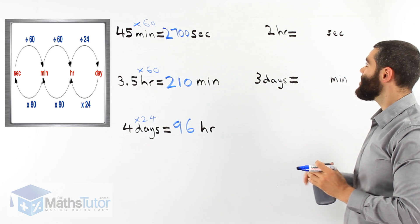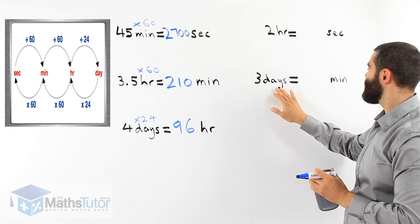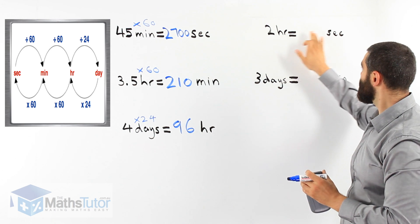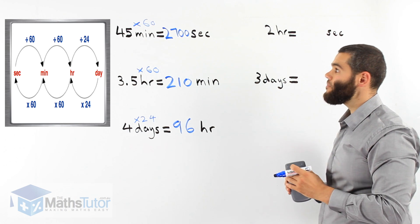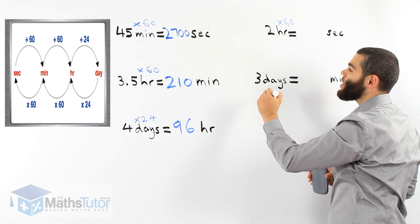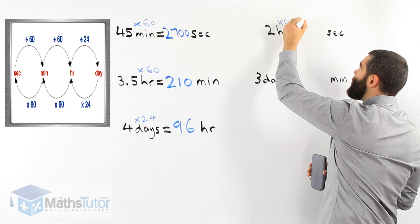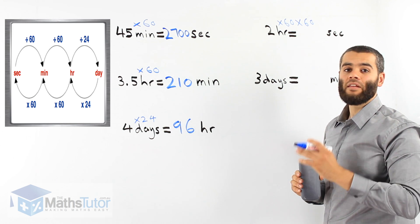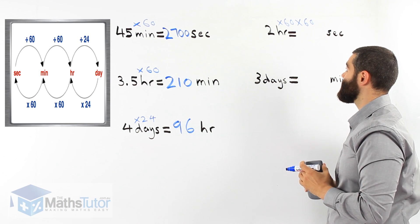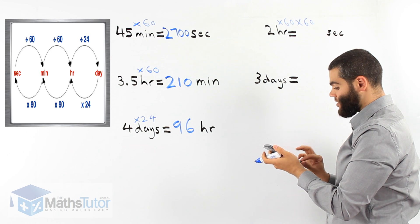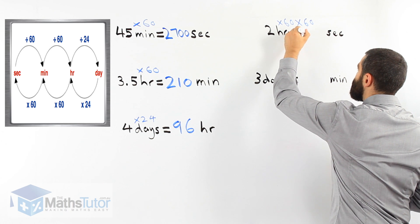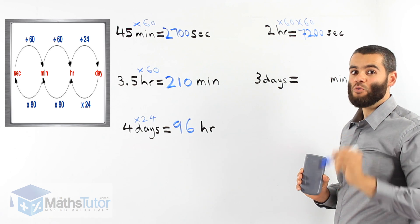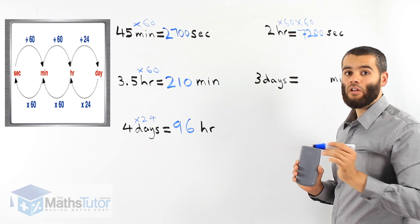In this example, we're going from hours to seconds for this one, and from days to minutes for the other. Two hours to seconds — we're going from hours all the way to seconds. To go from an hour to a minute we multiply by 60, and then from minutes to seconds we multiply by another 60. So two times 60 times 60. That gives us 7,200 seconds in two hours.